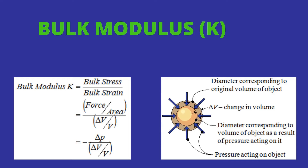Bulk modulus is defined as the ratio between the volume stress to the volume strain within the elastic limits. It can be written as bulk stress divided by bulk strain. The unit is Newton per meter squared. Consider a body of volume V with area of cross section A, with forces acting in all directions. Let del V be the change in volume due to the action of forces. The volume stress is F by A, and the volume strain is del V by V. So the bulk modulus is equal to (F/A) divided by (del V/V), with unit Newton per meter squared.